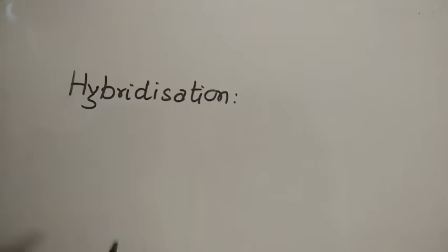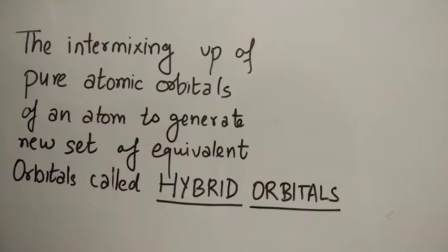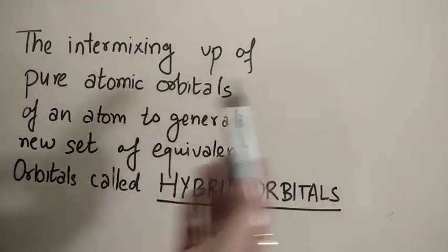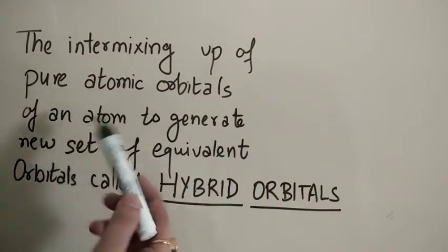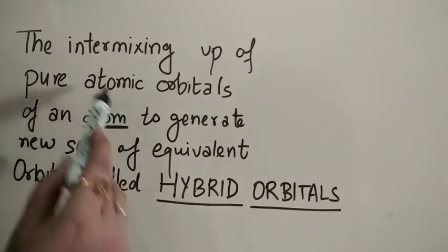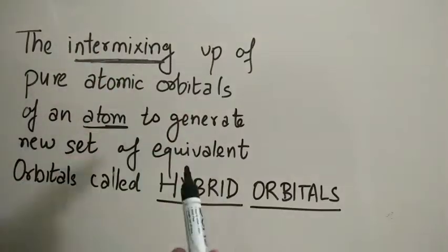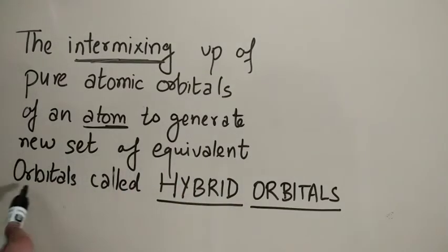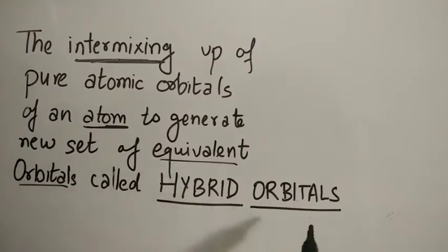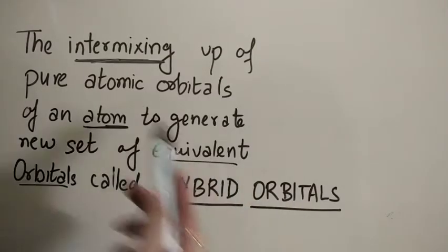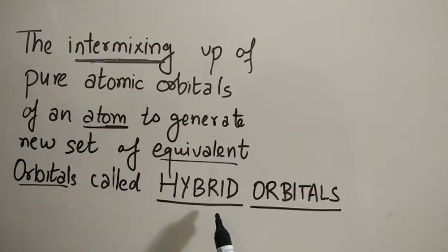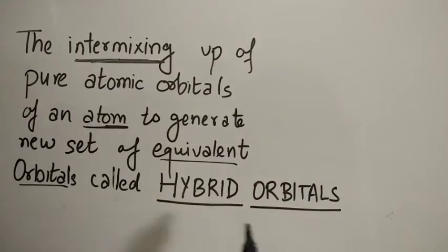In this video we are going to discuss hybridization and different types of hybridization. The intermixing of pure atomic orbitals of an atom, when they intermix to generate a new set of equivalent orbitals, is called hybrid orbitals. These atomic orbitals which intermix are called hybrid orbitals, and this whole process is known as hybridization.